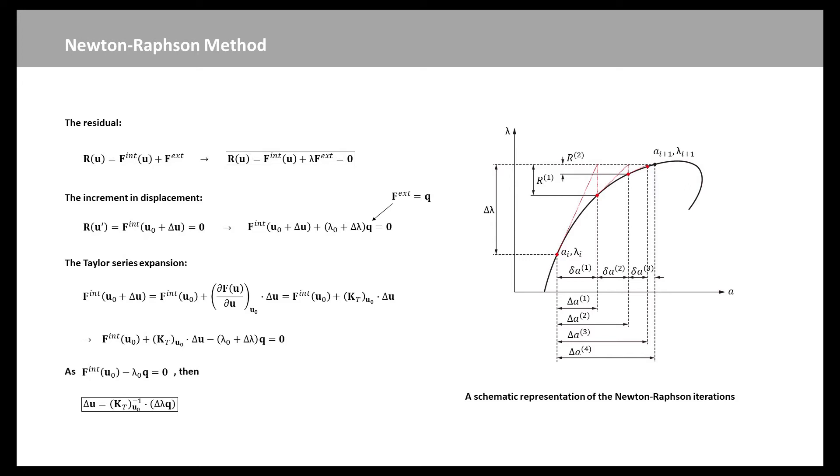Now, combining these equations, we can solve for delta u. We continue to provide displacement corrections until a norm of the residue vector is less than the specified tolerance. A schematic representation of the Newton-Raphson method is shown in right-hand side.